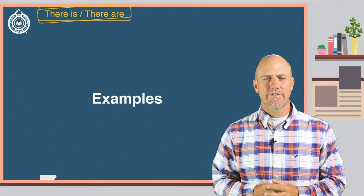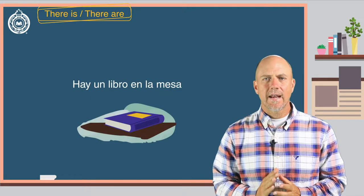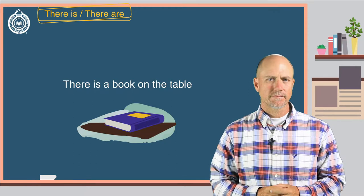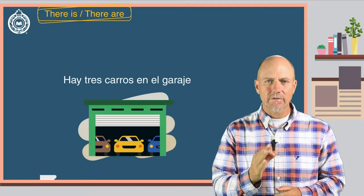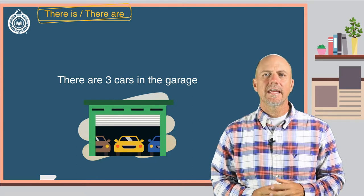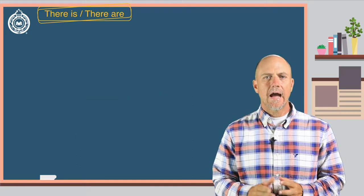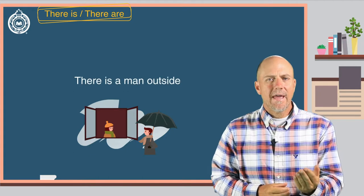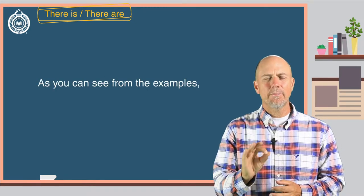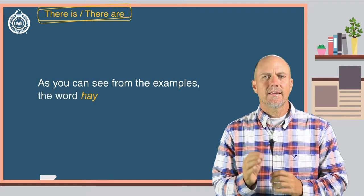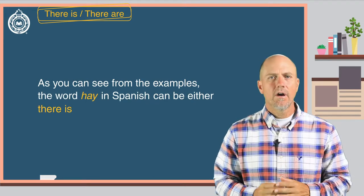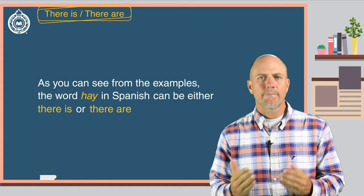Here are some examples. Hay un libro en la mesa. There is a book on the table. Hay tres carros en el garaje. There are three cars in the garage. Hay un hombre afuera. There is a man outside. As you can see from the examples, the word hay in Spanish can be either there is or there are in English.